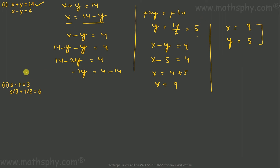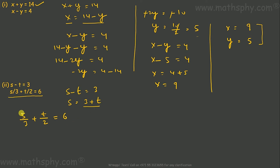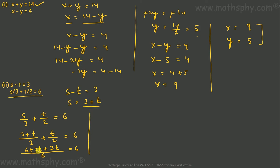Let's work on the next problem. Taking the easier equation: S minus T equals 3, so S equals 3 plus T. Now I'll use this in the other equation: S over 3 plus T over 2 equals 6. Replacing S with 3 plus T: (3 plus T) over 3 plus T over 2 equals 6. Taking the LCM, this becomes 6 plus 2T plus 3T over 6, which gives 6 plus 5T over 6 equals 6.